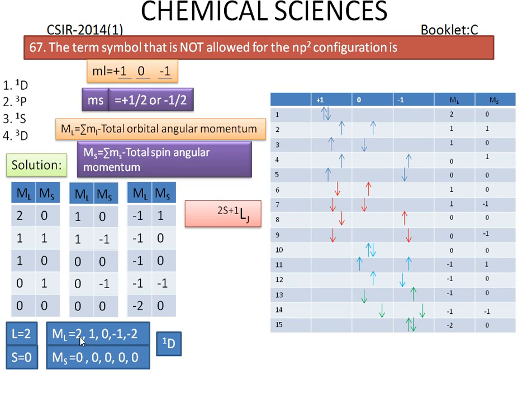The 1D term symbol has 5 microstates. The ML, MS combinations are: (2, 0), (1, 0), (0, 0), (-1, 0), and (-2, 0).